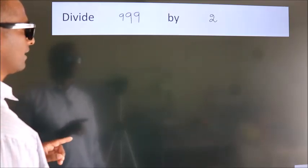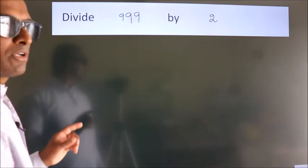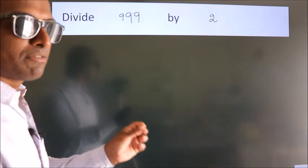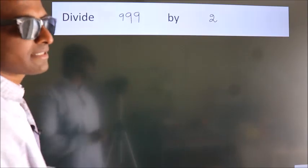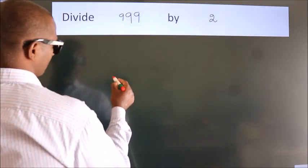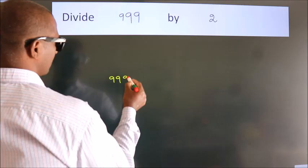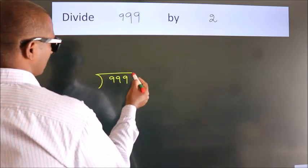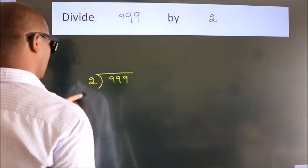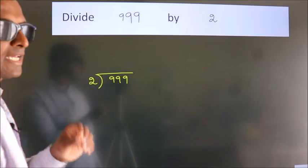Divide 999 by 2. To do this division we should frame it in this way. 999 here, 2 here. This is your step 1.